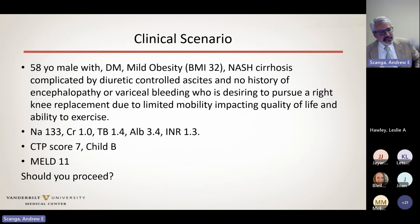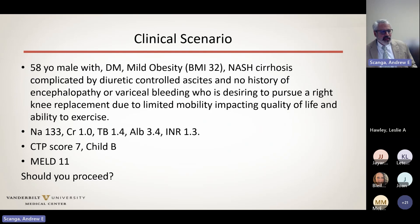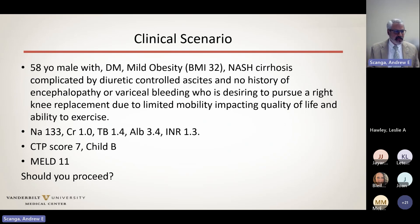I'm going to start with a clinical scenario that comes up in our practice quite a bit. A 58-year-old male with diabetes, mild obesity, NASH cirrhosis complicated by diuretic-controlled ascites and no history of encephalopathy or variceal bleeding, desiring a right knee replacement due to limited mobility impacting quality of life. His labs: sodium 133, creatinine 1.0, bilirubin 1.4, albumin 3.4, INR 1.3 — a little bit of synthetic dysfunction. His CTP score is 7, Child's B, and his MELD score is 11. Should you proceed? We'll return to this case at the end.